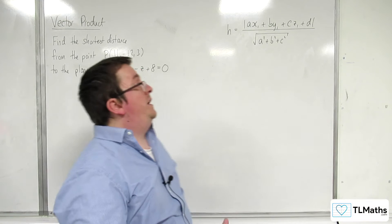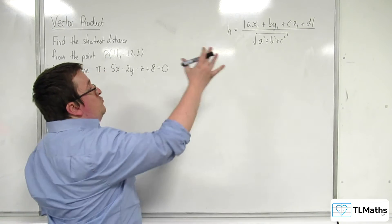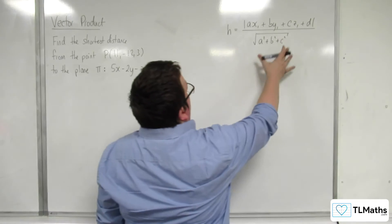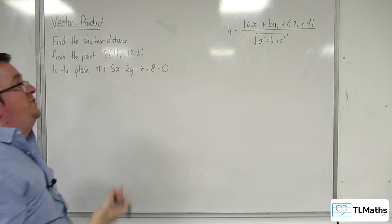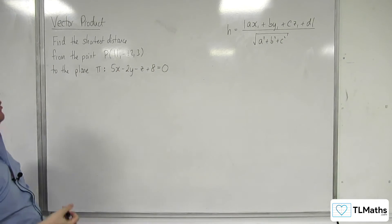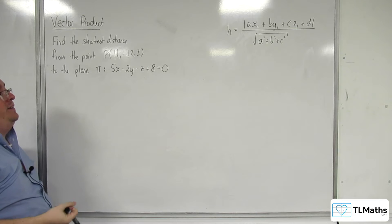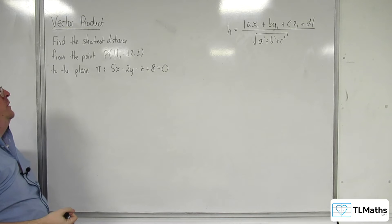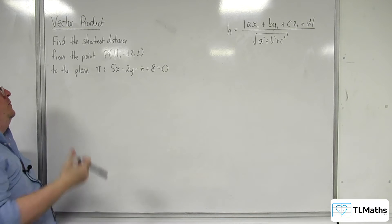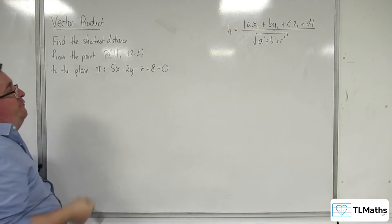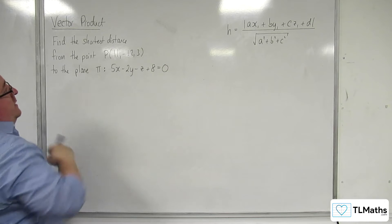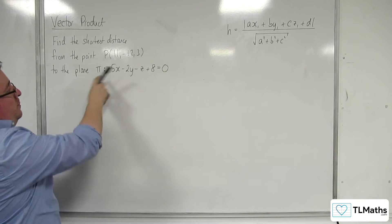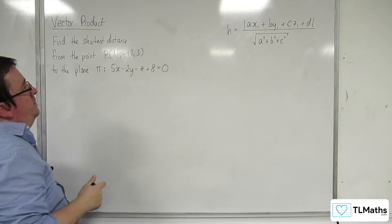In the previous video, we derived the formula for the shortest distance between a point and a plane. We're going to use that formula now with this point P and this plane pi.